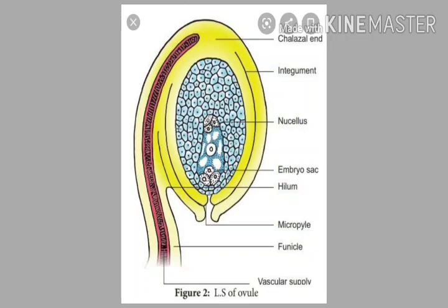Protective coverings or finger-like structures around the ovule are called integuments — there is an outer integument and an inner integument. Each ovule has two ends: the chalazal end and the micropylar end. There is a narrow pore in the integument called the micropyle, and the end near the micropyle is called the micropylar end.